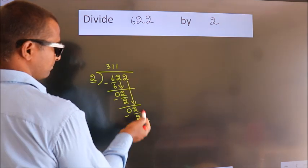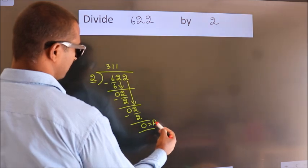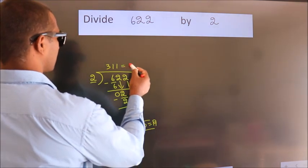No more numbers to bring it down. So we stop here. This is our remainder. This is our quotient.